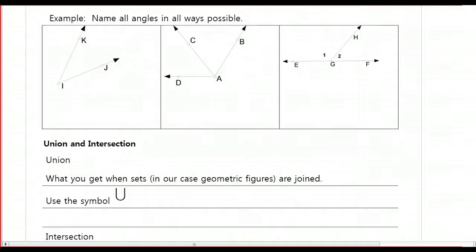So we were talking about angles, and we didn't quite get to the way to name angles. We've got three examples here. In the first example, we see that there's a single angle.